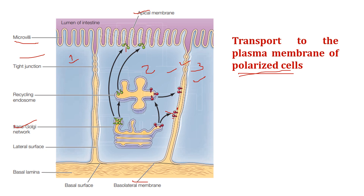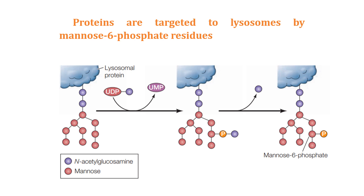Proteins are targeted to lysosomes by mannose-6-phosphate residues, as glycosylation with mannose-6-phosphate occurs within the Golgi apparatus. In the trans-Golgi network, the mannose-6-phosphate receptor binds to these particular proteins and transfers them in vesicles to the late endosome and then to the lysosome. This is the fundamental mechanism by which mannose-6-phosphate-tagged proteins are transferred from the trans-Golgi network to the lysosome.